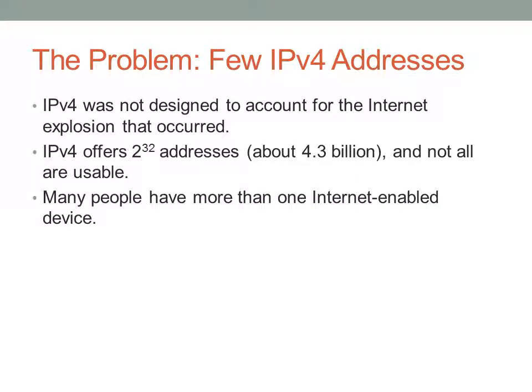Many people have more than one internet-enabled device. You're talking about 7 billion people, even though not all of those people have internet. There are an average of 5 internet-connected devices per person on the planet right now.